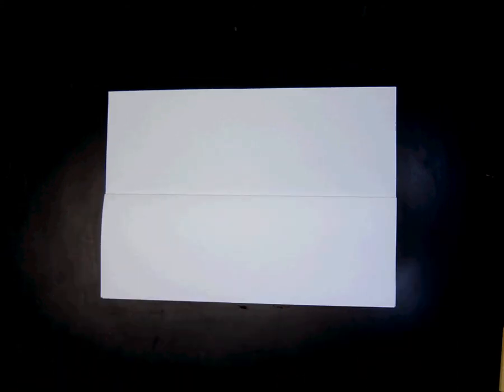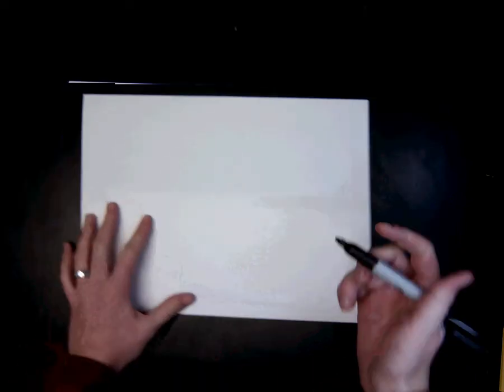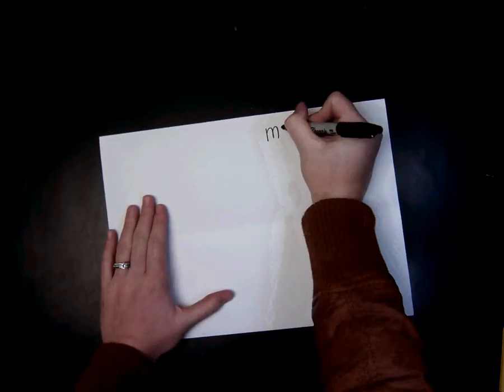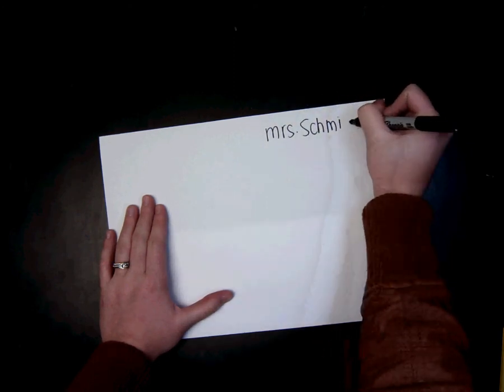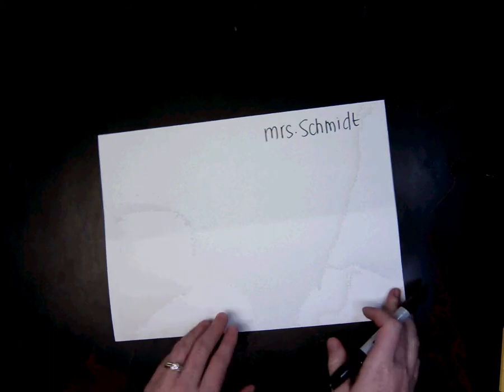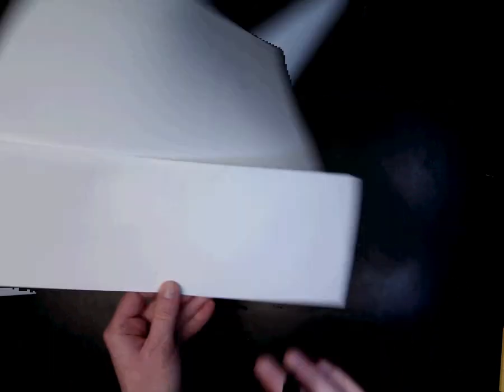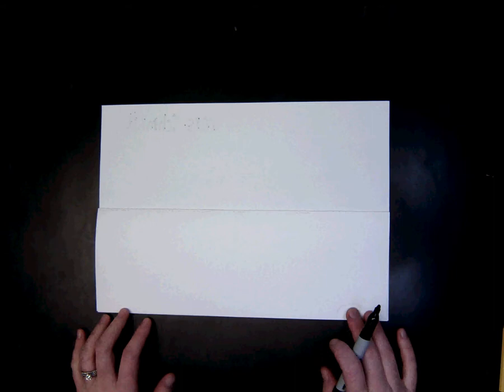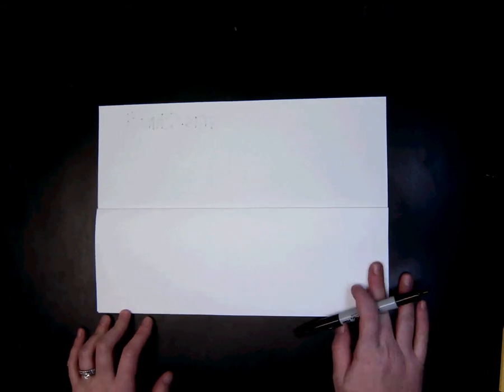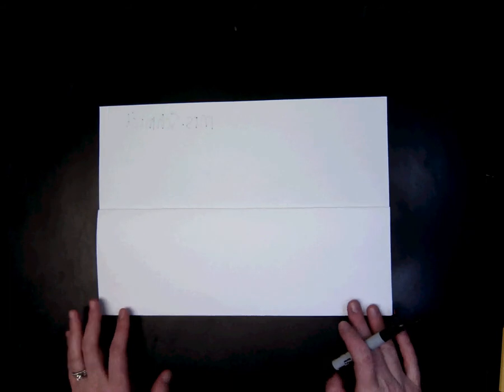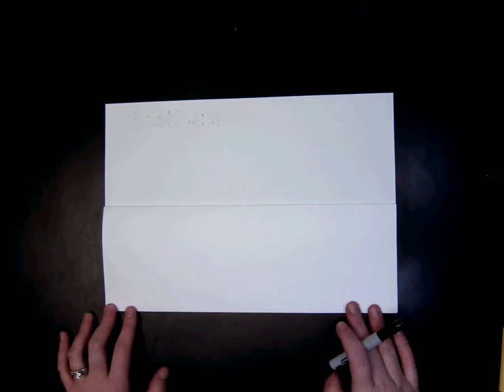The next thing you're going to do is flip over your artwork and write your name. Then when you're done, flip it back over. Today I'm going to be using Sharpie so that you can see, but you will be using pencil for the first steps today.